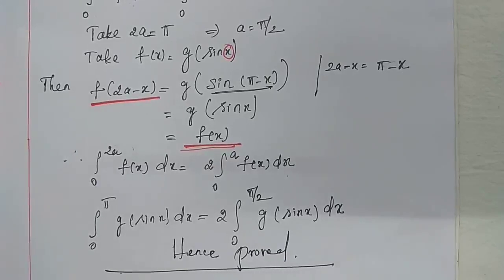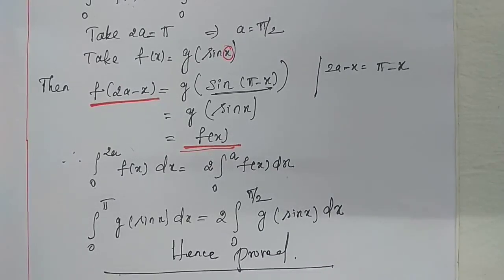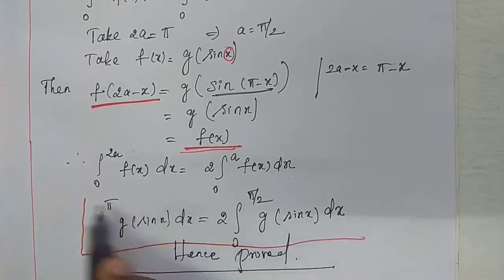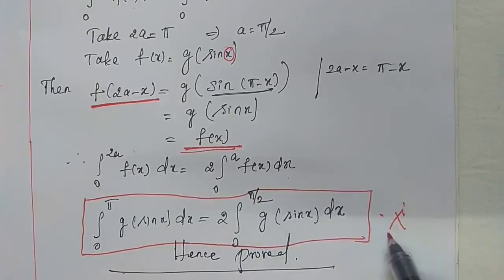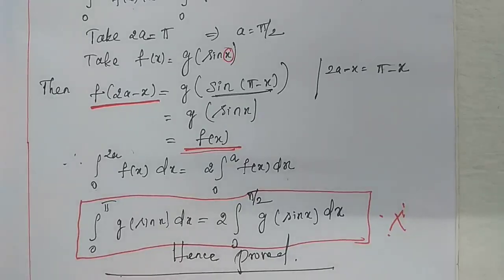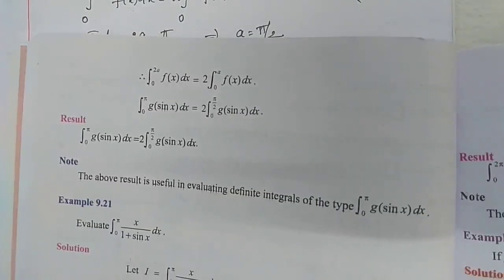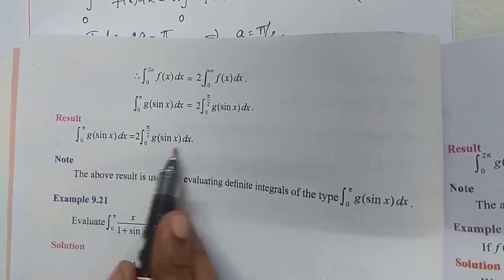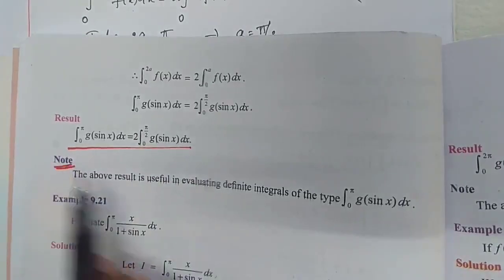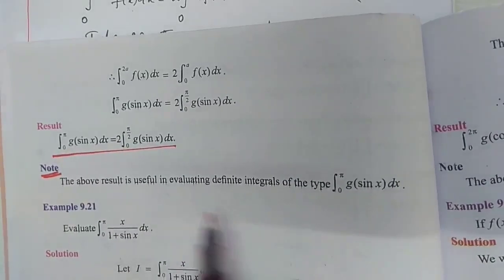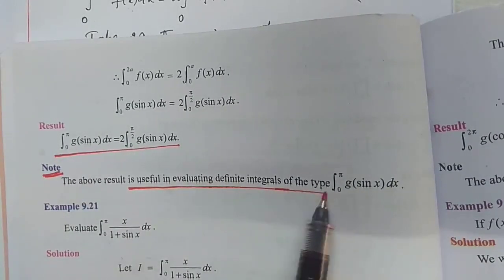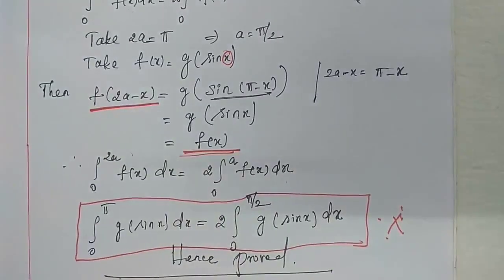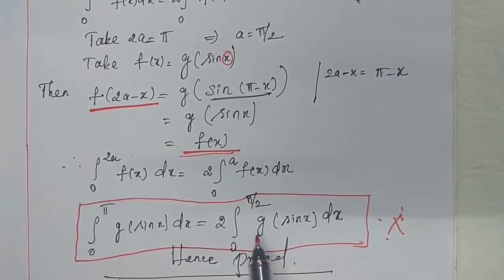Example 9.20 is also complete. This result — ∫₀^π g(sin x) dx = 2 × ∫₀^(π/2) g(sin x) dx — is one of the important results. Note that the above result is useful in evaluating definite integrals of the type ∫₀^π g(sin x) dx.